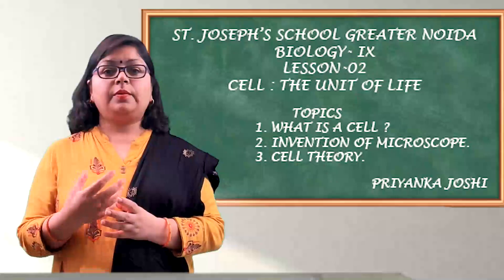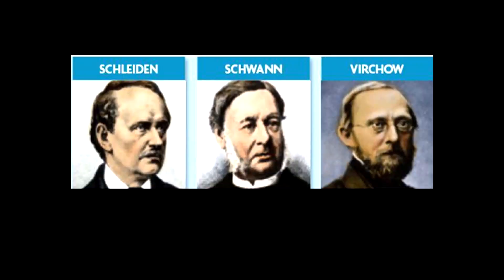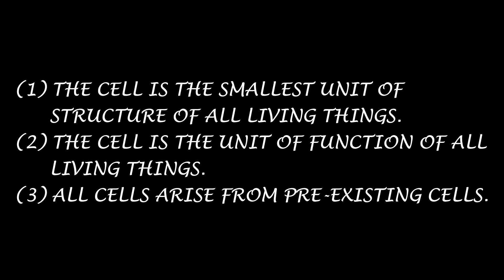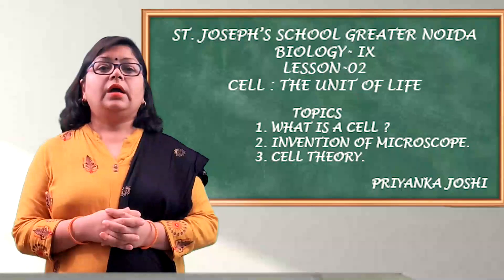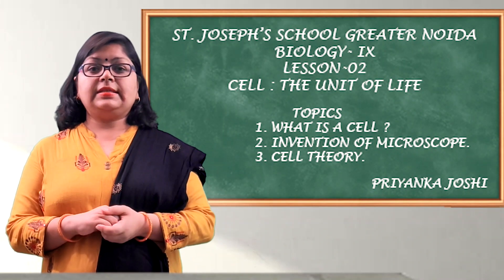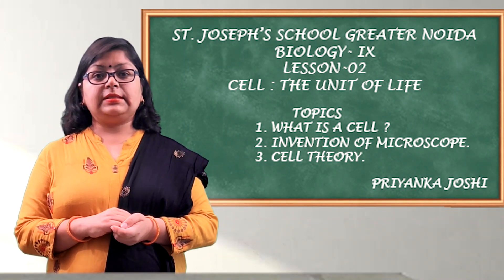Three scientists proposed the cell theory: Matthias Schleiden, Theodore Schwann, and Rudolf Virchow. The cell theory states three major points: first, the cell is the smallest unit of structure of all living things; second, all living things are made up of cells; and third, all cells arise from pre-existing cells.